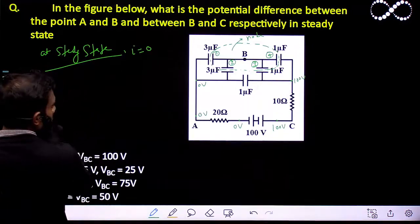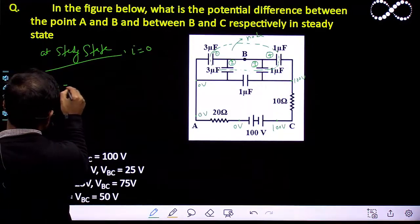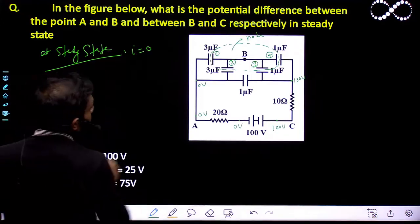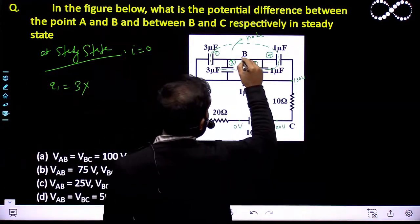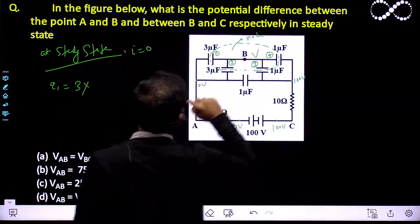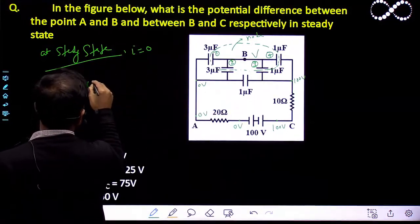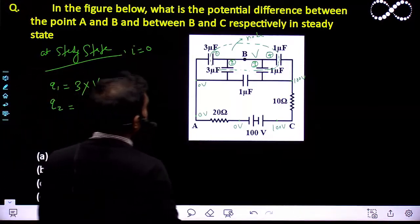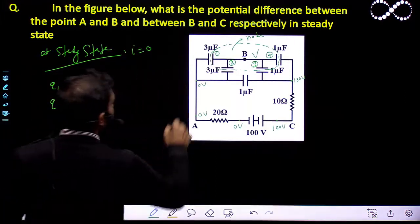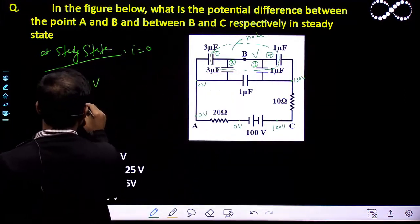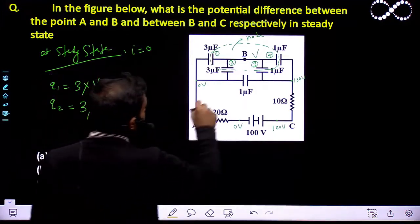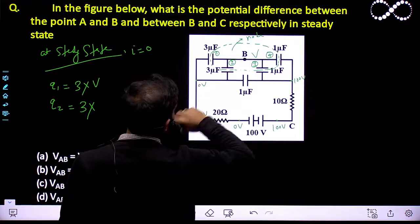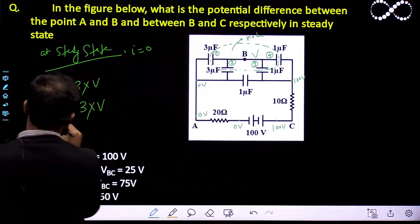Q1 will be equal to C into V. C is 3 and the potential difference — assuming the potential on this node is V — will be V minus 0, so that is V only. So Q1 = 3V. For Q2, C is also 3. The potential difference is V minus 0 again, so once again Q2 = 3V.